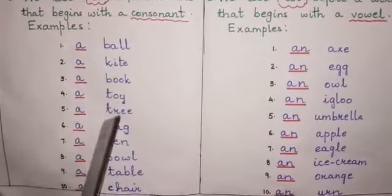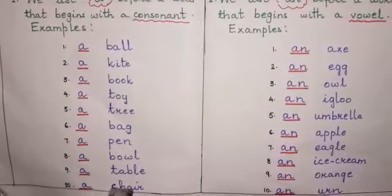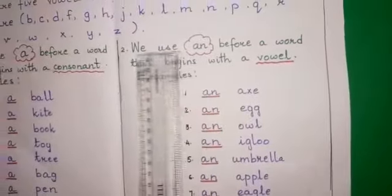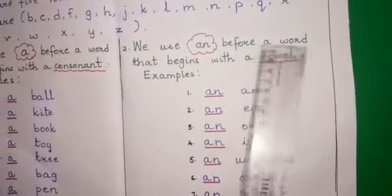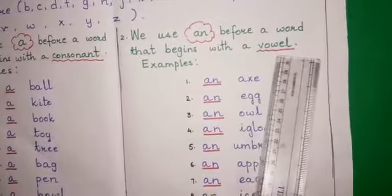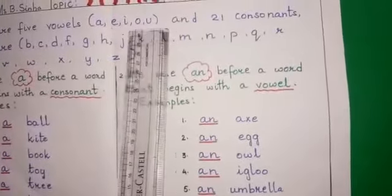So all the first letters over here are consonants. Now we come to 'an'. When to use an? We use an before a word that begins with a vowel. You know the five vowels: A, E, I, O, U.